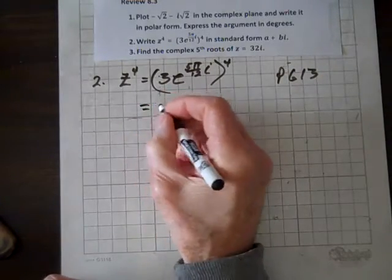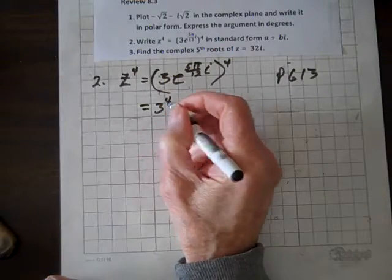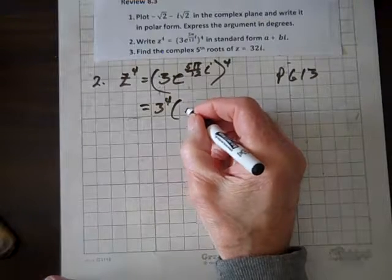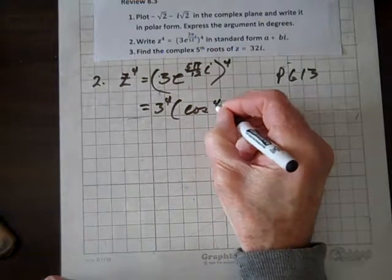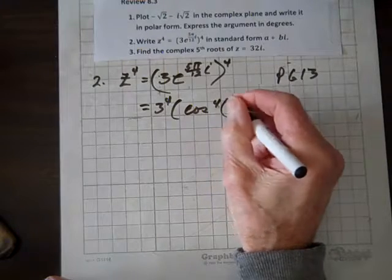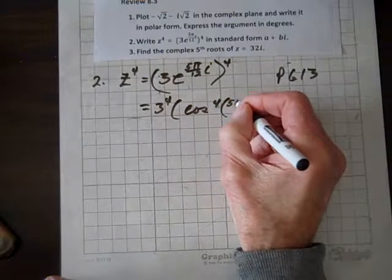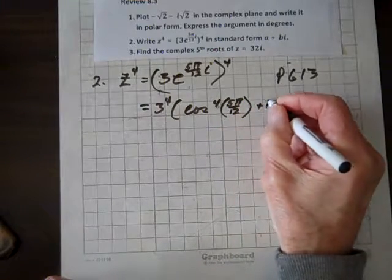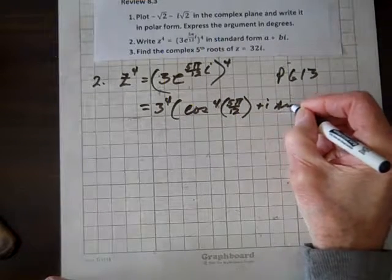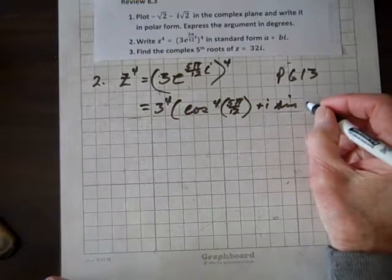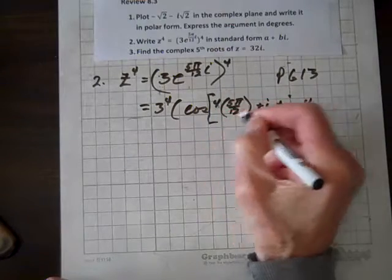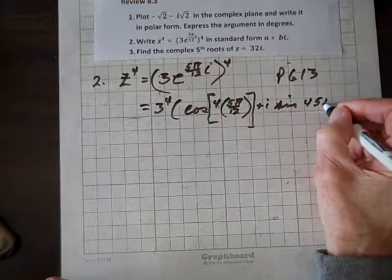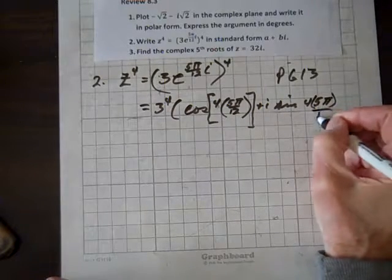And so that equals 3 to the fourth times the cosine of 4 times 5 pi over 12, plus i sine of 4 times 5 pi over 12.